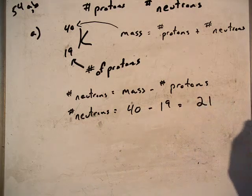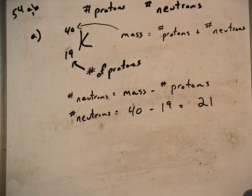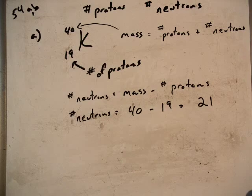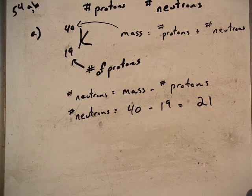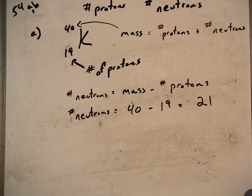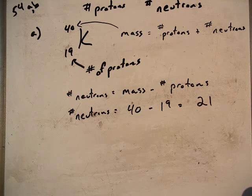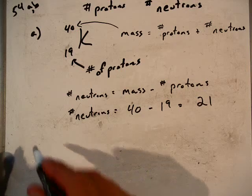This gives us a value for the number of neutrons to be 21. So for this particular potassium, potassium-40, we have 19 protons, that's what identifies it as potassium, and then it has 21 neutrons, which identifies it as a particular isotope of potassium. That's part A.